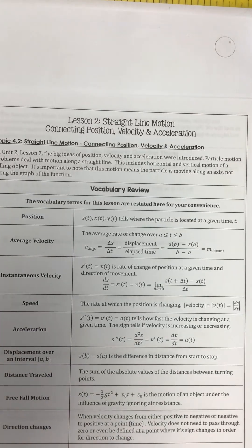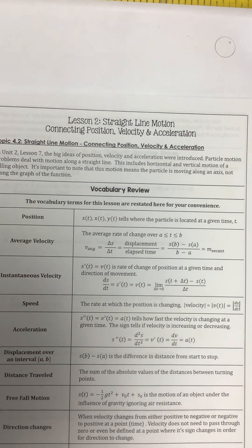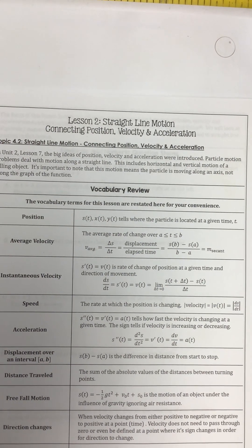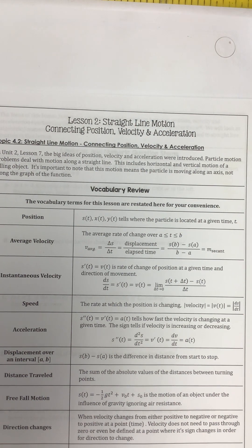We're looking at Lesson 2, Straight Line Motion, connecting position, velocity, and acceleration. In Unit 2, Lesson 7, the big ideas of position, velocity, and acceleration were introduced. Particle motion problems deal with motion along a straight line, including horizontal and vertical motion of a falling object. It's important to note that this motion means the particle is moving along an axis, not along the graph.